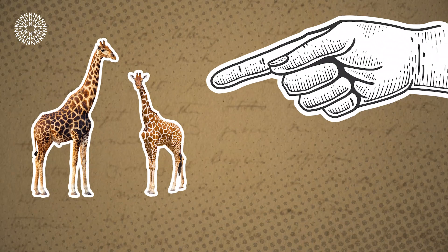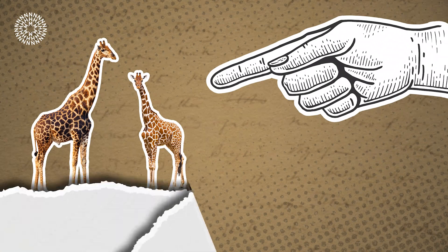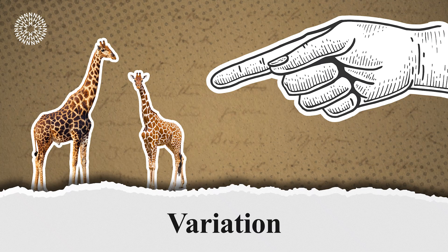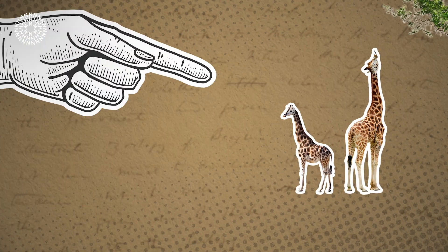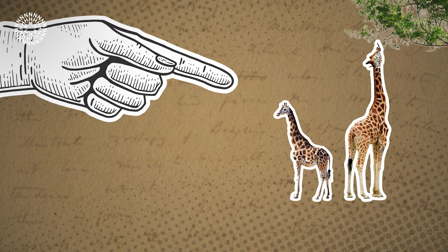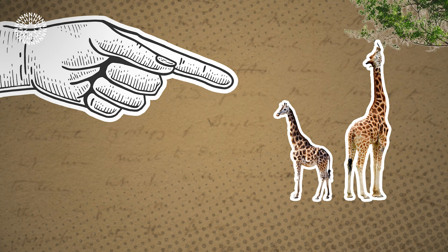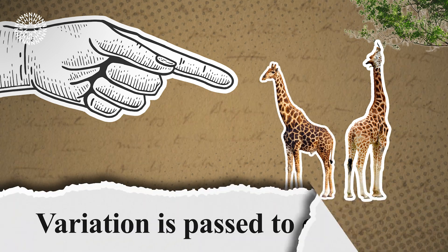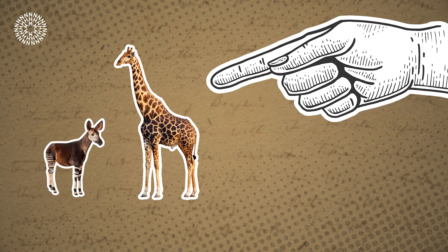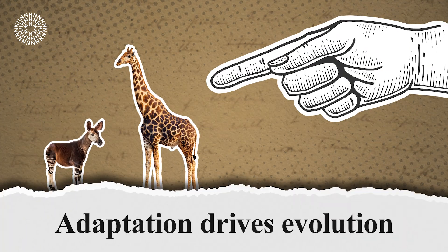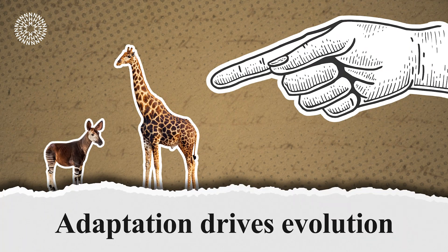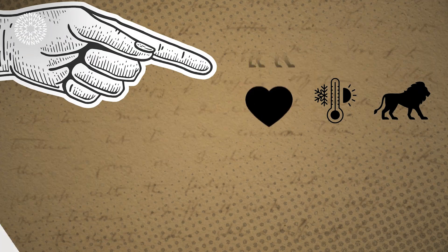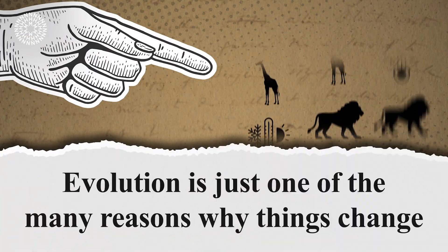So, what have we learnt? We know that individuals of a species are almost always slightly different from one another — this is called variation. We know that when this variation helps an individual survive and reproduce in its environment, it's passed on to offspring, who will share the benefits. We know that over time, this adaptation drives evolution, sometimes resulting in a new species altogether. And we know that evolution is just one of many reasons why things change.